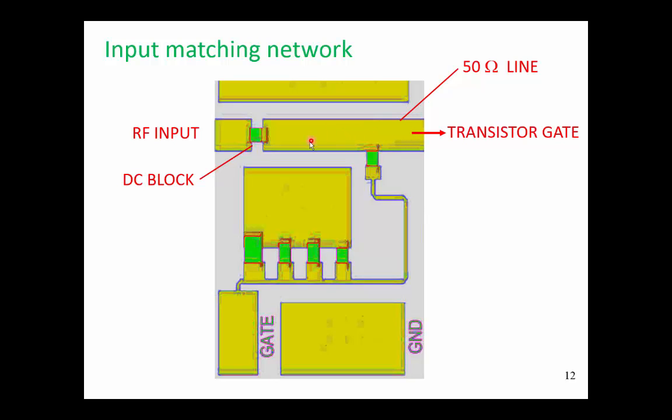So this is a 50 ohm line. This is our DC blocking capacitor. This is the connection to the RF input, which is 50 ohms.